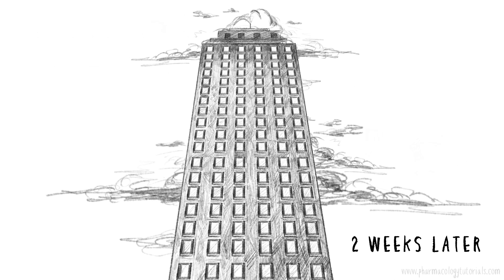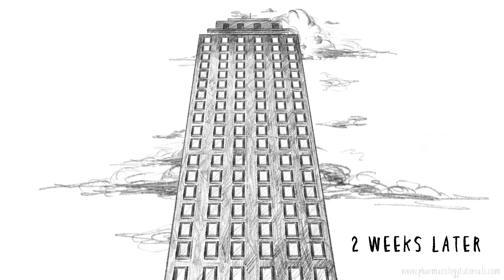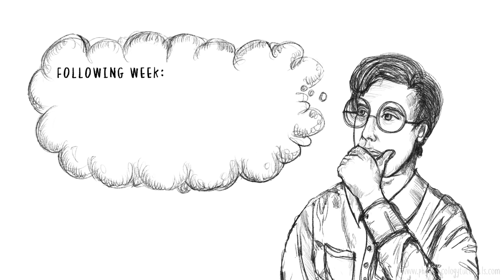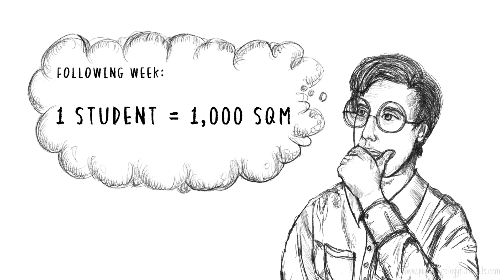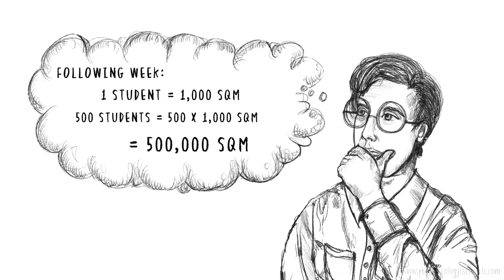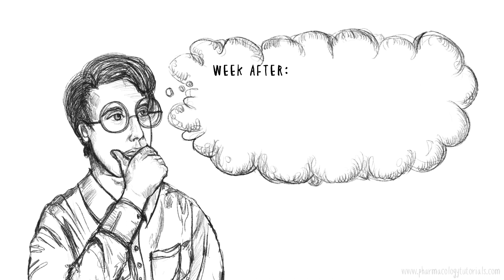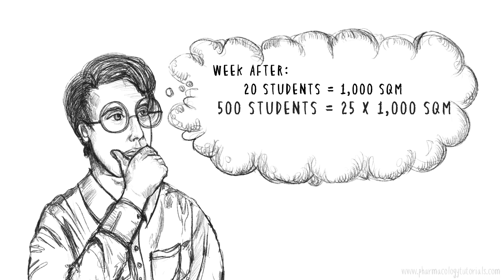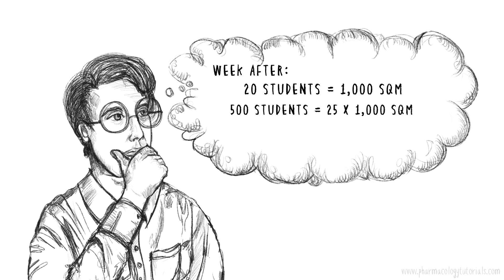To be more certain, he repeated the experiment over the next two weeks. The following week, he observed an average of only one student in the atrium, leading him to estimate the mall to be 500 times 1,000 square meters, or 500,000 square meters. The week after that, he observed 20 students in the atrium, leading him to estimate the mall size to be only 25,000 square meters.